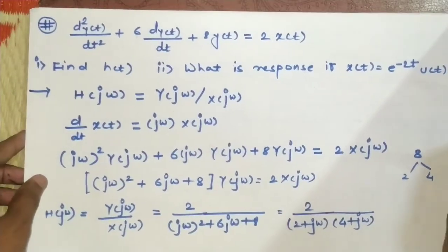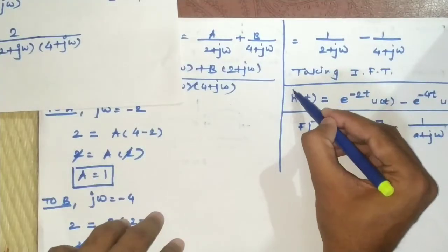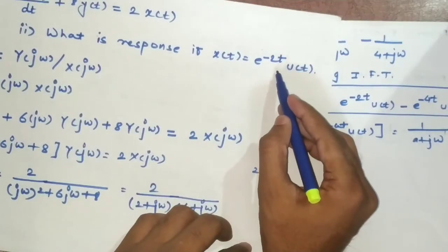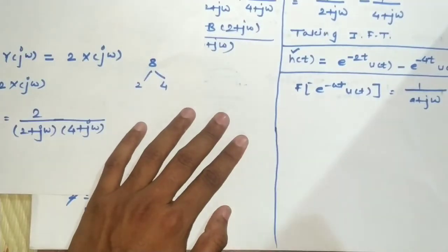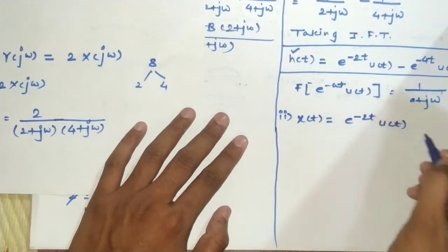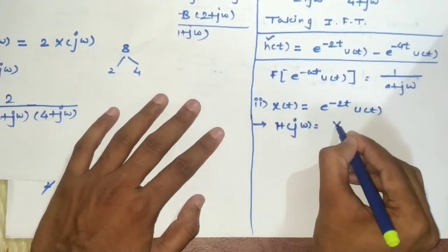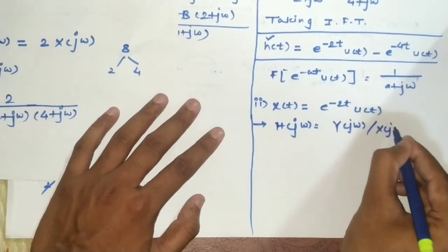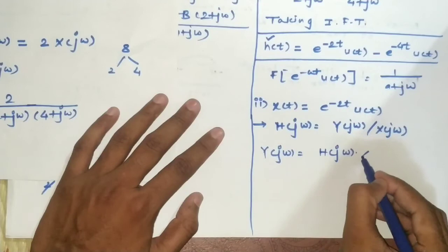Now proceeding to the second question: what is the response if the input is changed? Once the system's impulse response H(t) is defined it does not change — only the input changes. The new input is x(t) = e^(−2t)·u(t). To find y(t), we use the relation Y(jω) = H(jω) × X(jω). We already have H(jω); the Fourier transform of x(t) = e^(−2t)·u(t) is X(jω) = 1/(2 + jω).